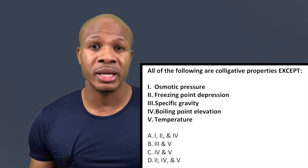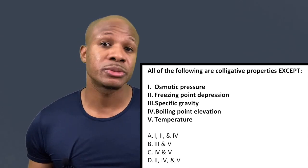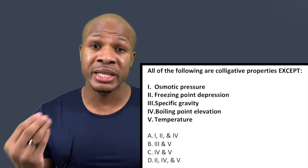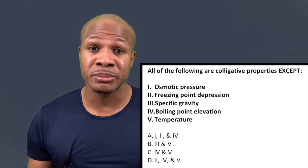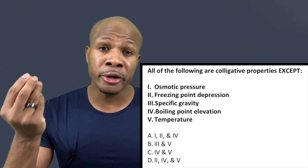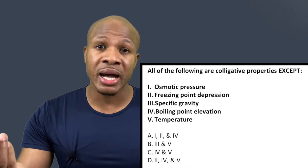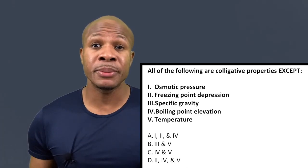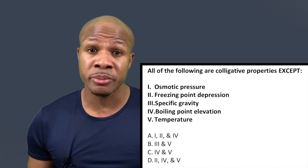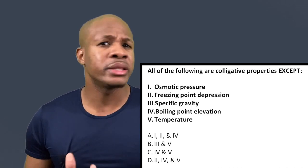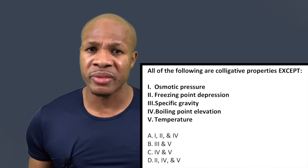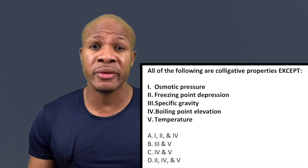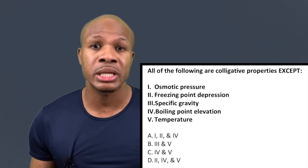So freezing point depression is a colligative property and is not an exception. Number three: specific gravity. Specific gravity is basically the density of an object. Density tells you the grams of the object divided by the volume of the object, so density depends on the mass and the volume of the object — it does not depend on the osmolarity.